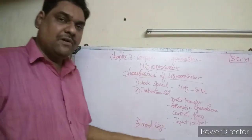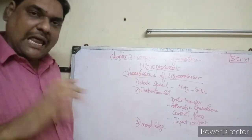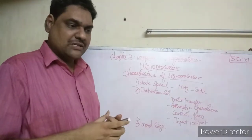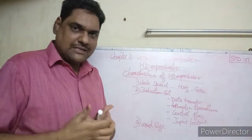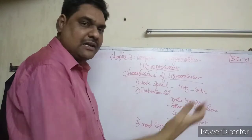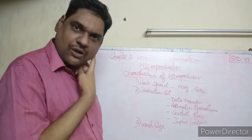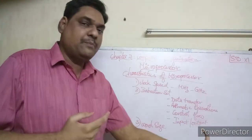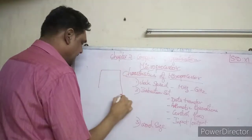The third characteristic is word size. Word size refers to the number of bits of information the microprocessor can process from RAM at one time. Memory is made up of bits and bytes.